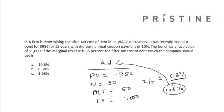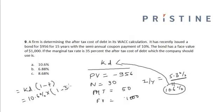Now we calculate the after-tax cost of debt using the formula: Kd × (1 − T), which equals 10.6% × (1 − 35%), giving us 6.88%. So option B is the correct answer.